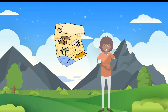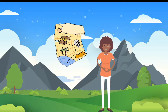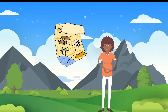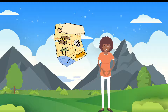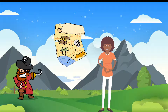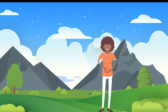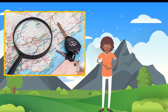Have you ever looked at a map? A map is a kind of drawing that shows us what an area looks like. It can be used to help us navigate around that area and maybe find a hidden treasure. There are different kinds of maps. Some maps show us where the streets in a city are — those are called street maps.